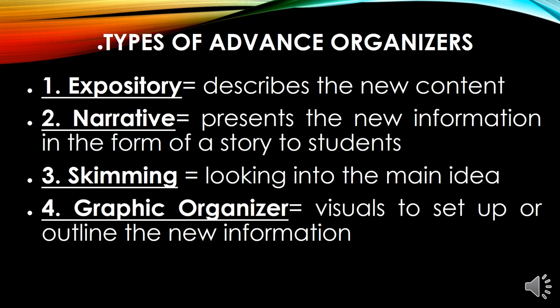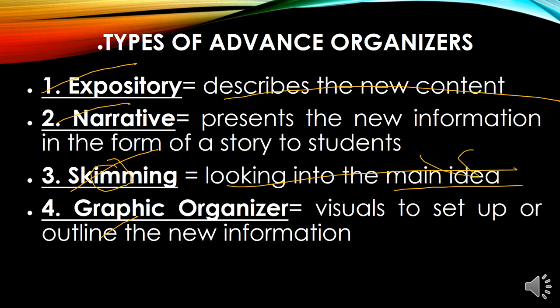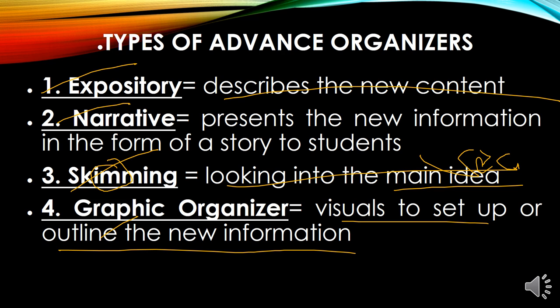There are basically four types of advanced organizers: expository, narrative, skimming, and graphic organizers. Expository describes and elaborates on new content, giving information. Narrative gives information by telling a story. Skimming focuses on the main idea — remember: double-M in skimming stands for main idea. Scanning, with double-N, stands for noting details. Graphic organizers are visuals set up to outline information — examples include fishbone diagrams, Venn diagrams, and tables. These are the basic types of advanced organizers.